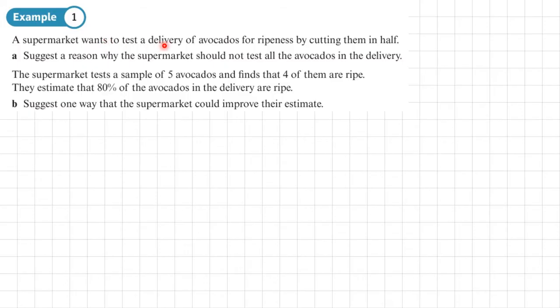Example one, a supermarket wants to test the delivery of avocados for ripeness by cutting them in half. Part A is asking us to suggest a reason why the supermarket should not test all the avocados in the delivery. Well, they will end up destroying all of the avocados and there won't be any left to sell.